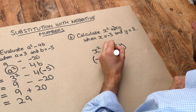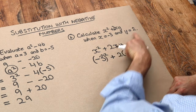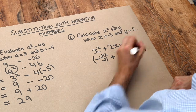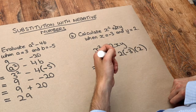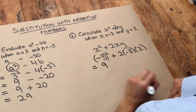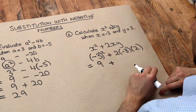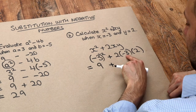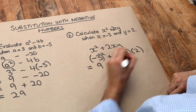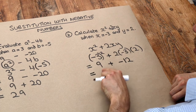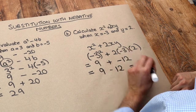So we have plus 2 times minus 3, times y which is 2. Now let's evaluate: minus 3 squared — negative times negative is positive — so it's positive 9. Then plus (always copy the middle symbol): 2 times minus 3 is negative 6, times 2 is minus 12. And then 9 plus negative 12 is the same as 9 minus 12, which is minus 3.